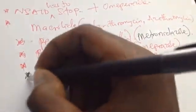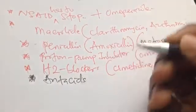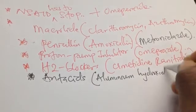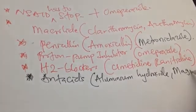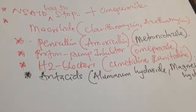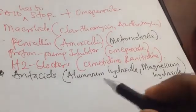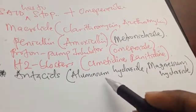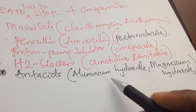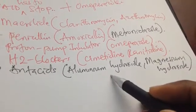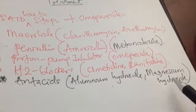Another drug class is antacids — for example, aluminium hydroxide and magnesium hydroxide. Important caution: aluminium hydroxide should not be given to elderly women because they are already prone to osteoporosis due to estrogen deficiency, and aluminium hydroxide itself can worsen osteoporosis. Magnesium hydroxide should be used instead in such cases.